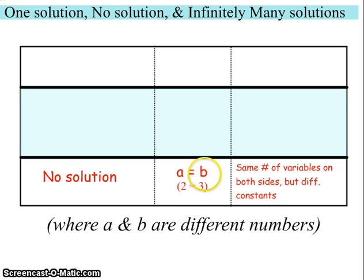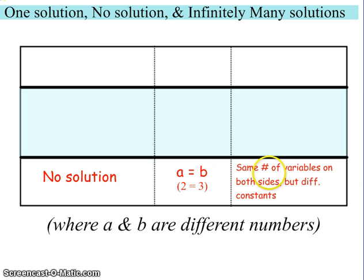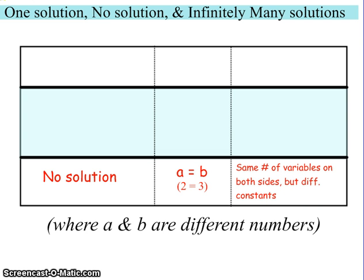What happens is, one of the key signs is that when we try to solve it, we get different numbers on both sides of the equal sign. And one of the key factors we saw to start with is that when we had our simplified expressions on both sides, we had the same number of variables but different constants. So that's a no solution type of equation.